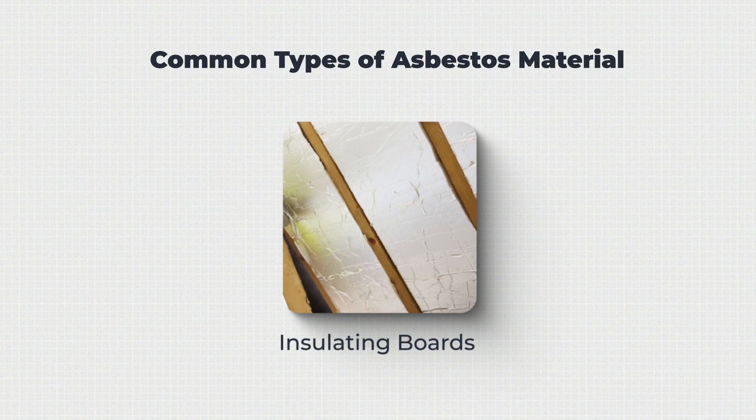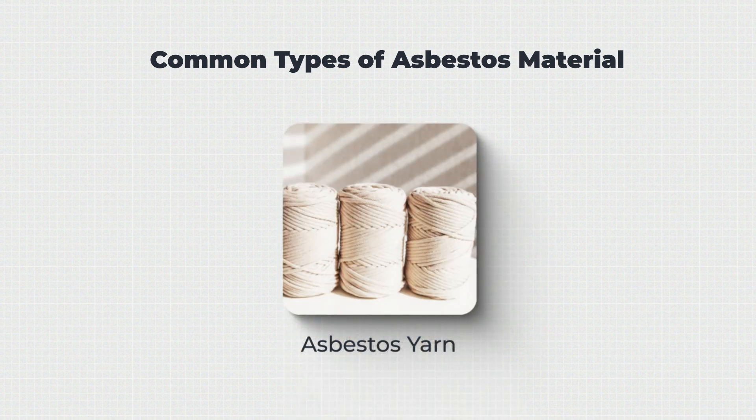Insulating boards, sometimes known as AIBs, were made by mixing cement or calcium silicate with asbestos fibres. This provided fire-resistant insulation within walls, as well as partition sections and ceiling tiles. Asbestos yarn was used to strengthen rope and provide packing material, mostly used to create fireproof clothing and materials, and also used in ceramic fuse holders.